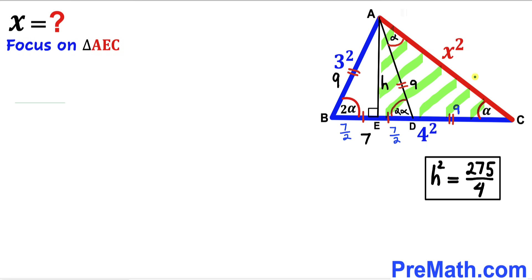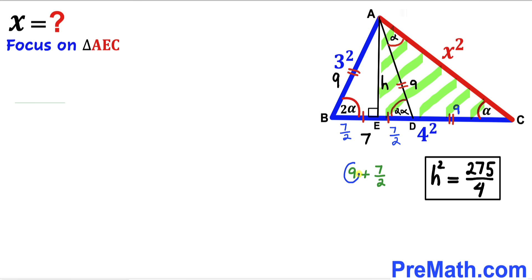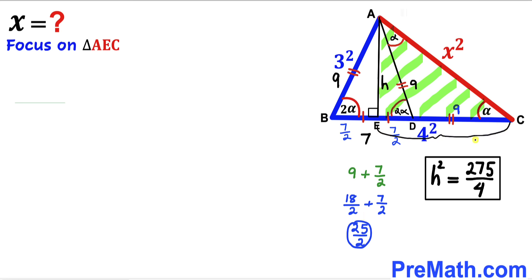Now let's focus on the other right triangle AEC. We can see that the whole EC length is 9 plus 7/2. Rewriting 9 as 18/2, we get 18/2 + 7/2 = 25/2. So the EC length turns out to be 25/2.